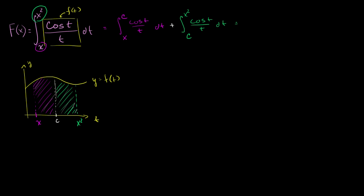So this is going to be equal to, let me rewrite it, the negative of the definite integral from c to x of cosine t over t dt. And then we have plus the definite integral that goes from c to x squared of cosine t over t dt.